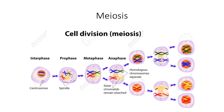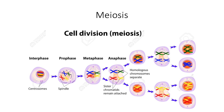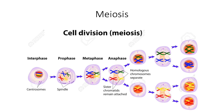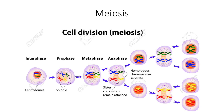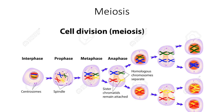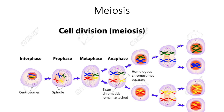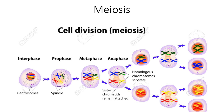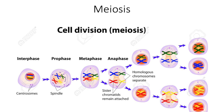Meiosis is a type of cell division that results in four daughter cells, each with half the number of chromosomes of the parent cell, as in the production of gametes and plant spores.